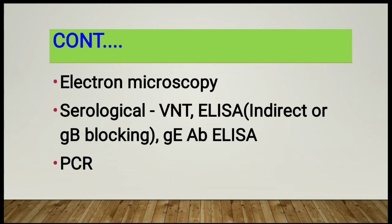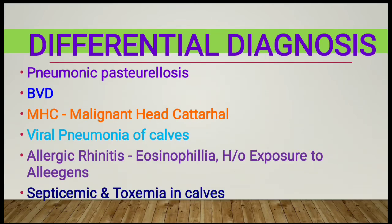Electron microscopy can also be used for diagnosis. For serology, virus neutralization test, ELISA (indirect or glycoprotein B blocking), and glycoprotein E antibody ELISA can be used, along with PCR. Differential diagnosis includes pneumonic pasteurellosis, BVD, malignant head catarrhal fever, viral pneumonia of calves, and allergic rhinitis, in which eosinophilia and history of exposure to allergens can be noted. Septicemia and toxemia in calves can also be considered.